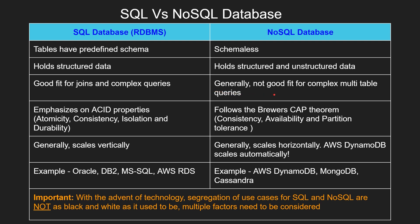For NoSQL, it is generally not a good fit for complex multi-table queries. Next, SQL databases emphasize ACID properties — atomicity, consistency, isolation, and durability. NoSQL databases follow Brewer's CAP Theorem — consistency, availability, and partition tolerance.